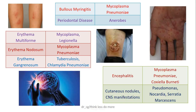Erythema multiforme and erythema nodosum can be caused by Mycoplasma or Legionella infections. Ecthyma gangrenosum is a feature of either TB or Chlamydia infection. Bullous myringitis is seen in patients with Mycoplasma infection. Pneumonia patients having periodontal disease have high chances of lung infiltration with anaerobic organisms. Associated encephalitis can be caused by Mycoplasma pneumoniae or Coxiella burnetii. Cutaneous nodules and CNS manifestations are seen with LRTI in Pseudomonas, Nocardia, or Serratia infection.